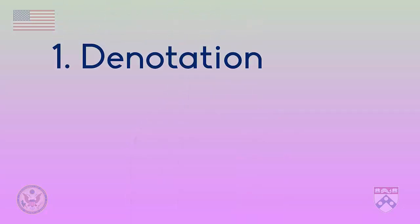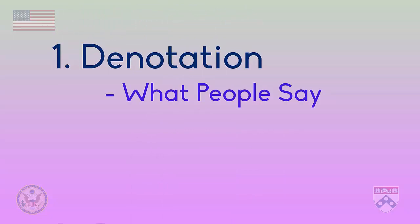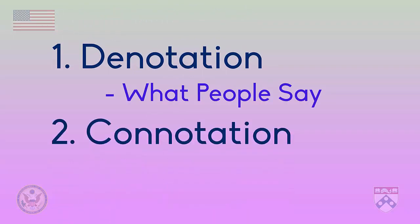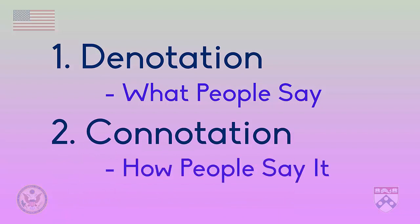To summarize, we've discussed denotation, which is the basic definition of a word — it's what people say. We've also discussed connotation, which is the feelings we have about a certain word — this is how people say something. Next we're going to play a game about connotation.